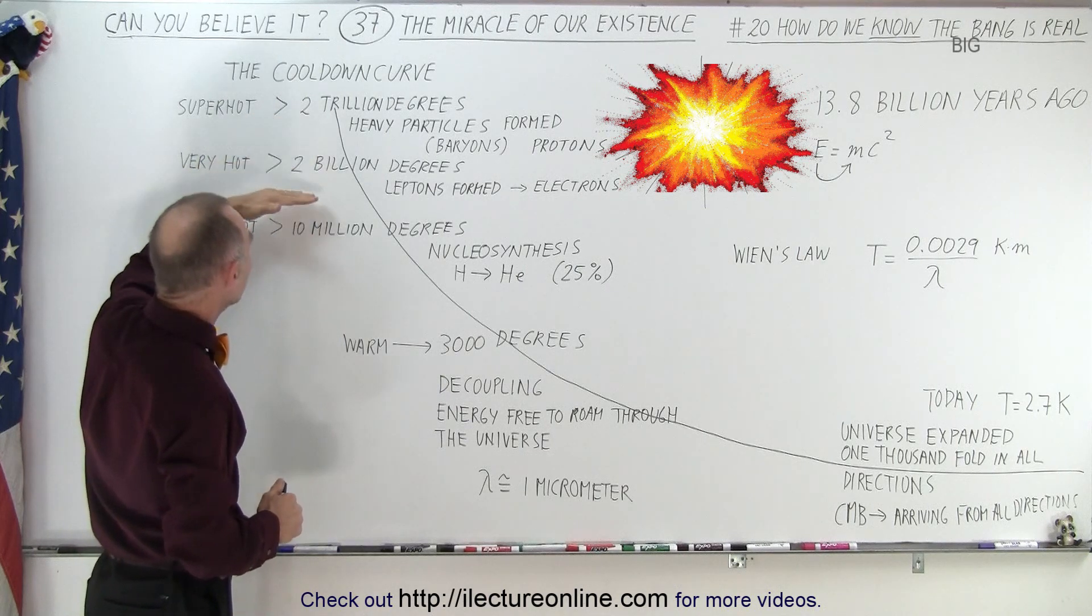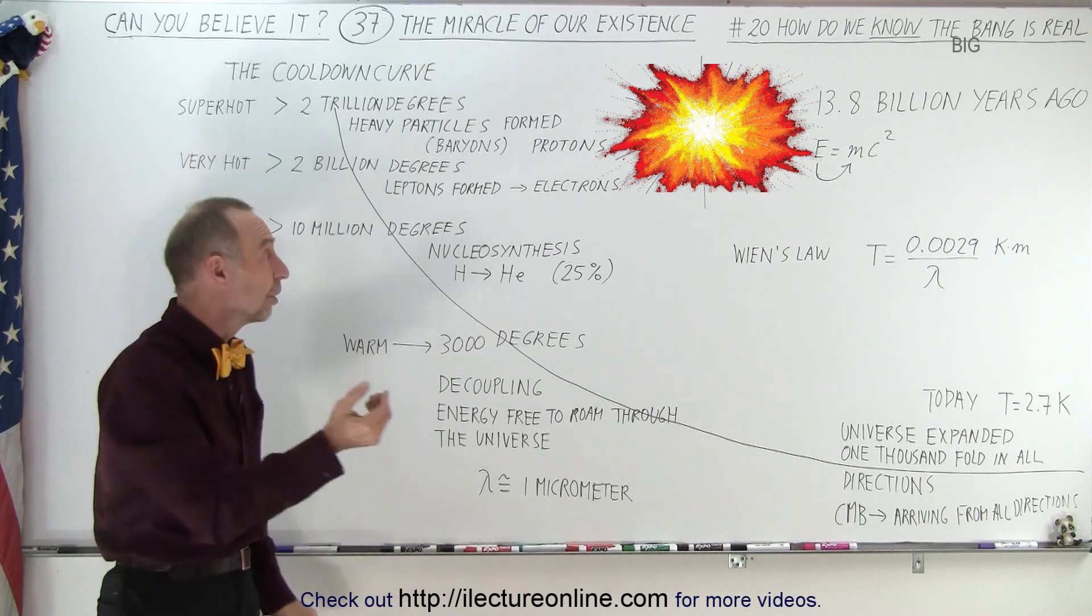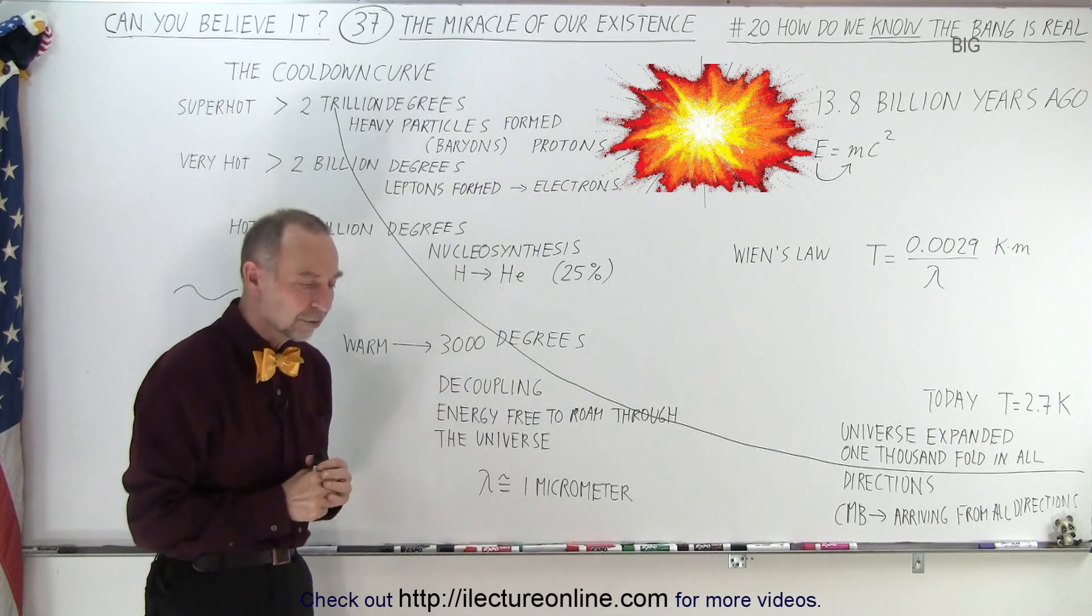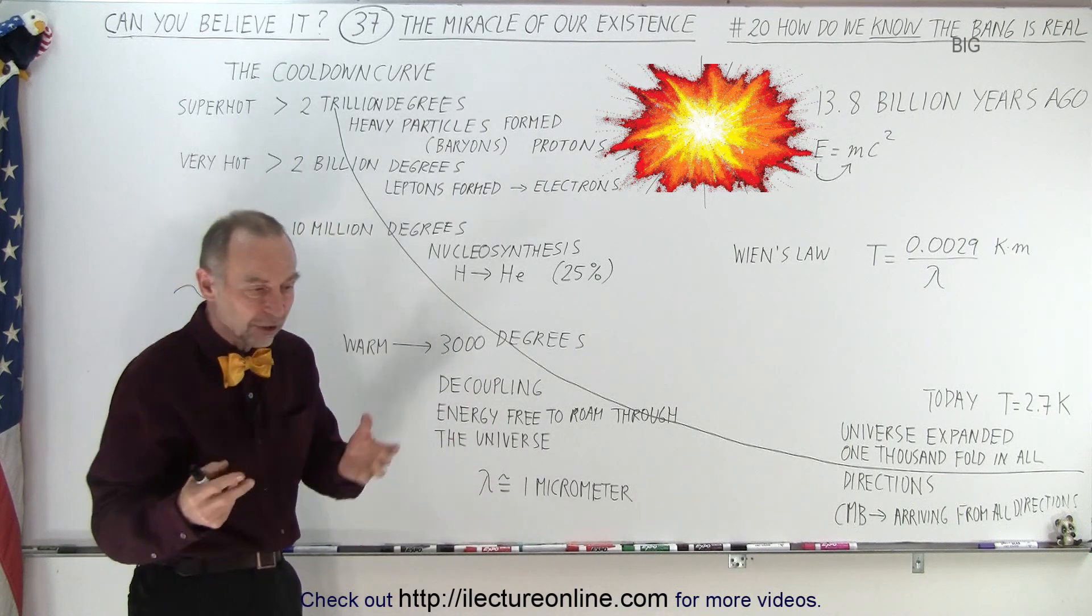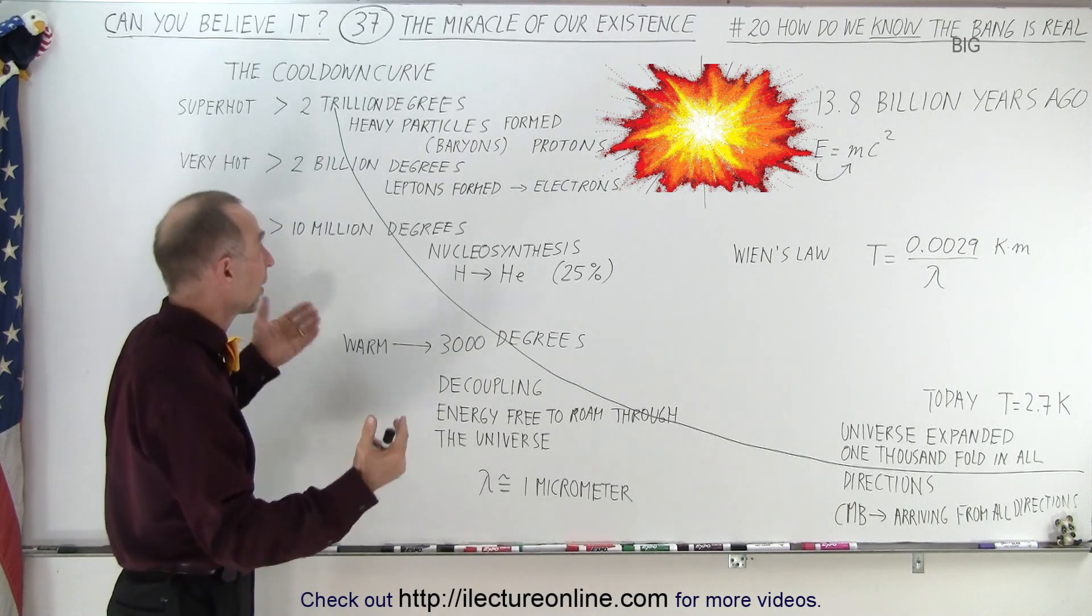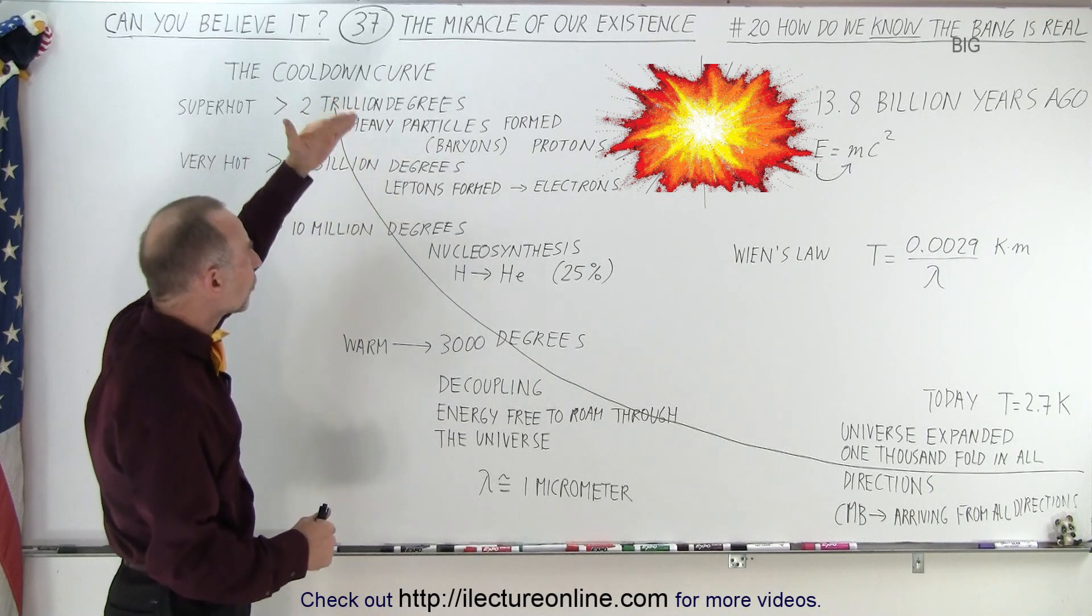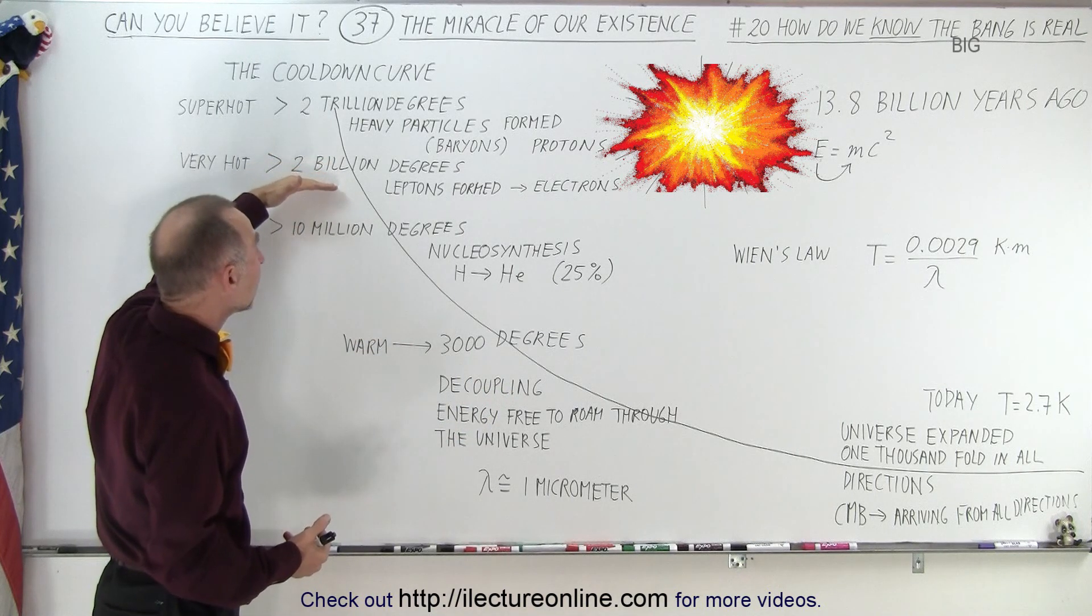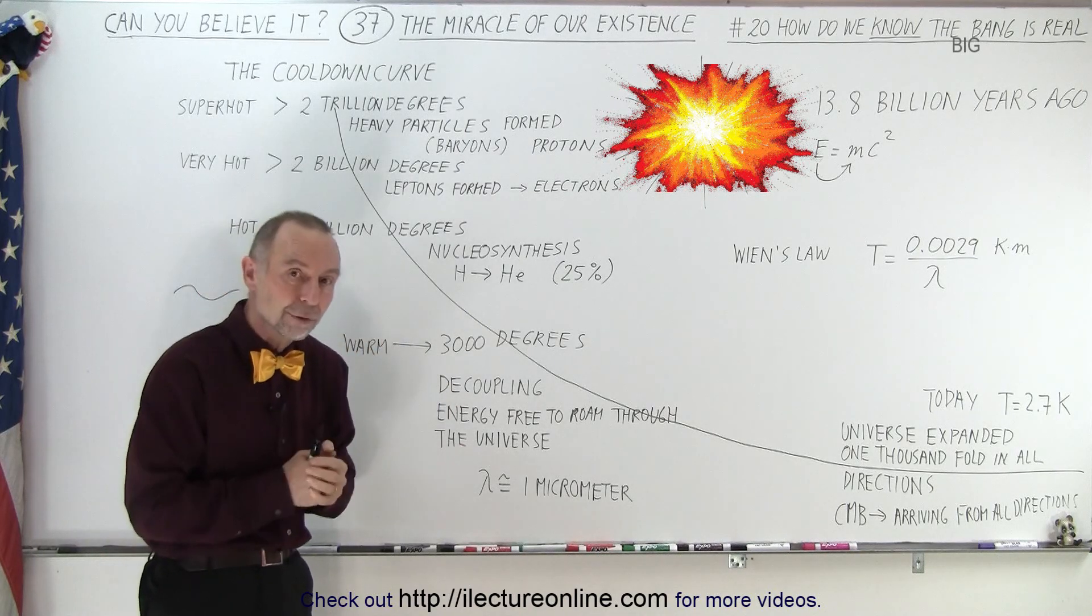As the universe continued to cool down, between two trillion and two billion degrees, smaller particles could form, such as leptons, which essentially are what we call electrons today, which is a subset of those leptons. Again, there were electrons, particles and antiparticles, positrons, and they annihilate each other. But at some point we have a surplus of electrons. We'll talk about that in more detail, and then we had all the protons and all the electrons the universe would ever have. Because once the temperature dropped below two billion degrees, electrons could no longer be formed, and it's way too cool for baryons to form, for protons to form.